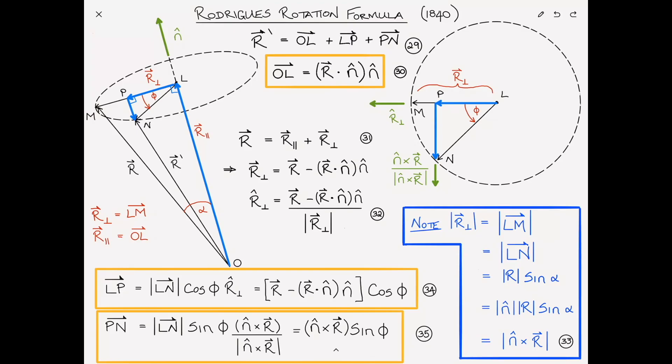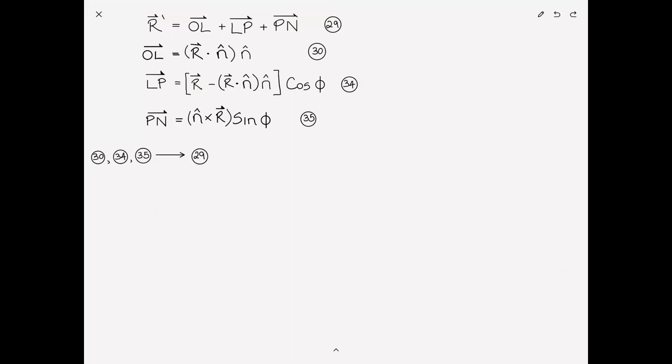So we're basically done. Let's just put it all together on the next page. We know that r prime is the sum of these three vectors, and we have expressions for each of these individual vectors: OL, LP, and PN. So all that remains to be done is to take equations 30, 34, and 35 and substitute them into equation 29. This gives us that r prime is equal to r · n̂ times n̂ plus (r - r · n̂ · n̂) cos φ plus n̂ × r sin φ.